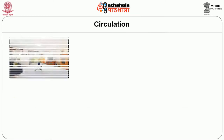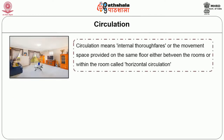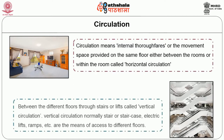The next principle is circulation. Circulation means internal thoroughfares — the movement space provided on the same floor either between rooms or within rooms, called horizontal circulation, and between different floors through stairs or lifts, called vertical circulation. Passages, corridors, halls, and lobbies serve horizontal circulation, whereas stairs, staircase, electrical lifts, ramps, etc. are means of access to different floors for vertical circulation.